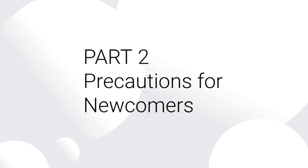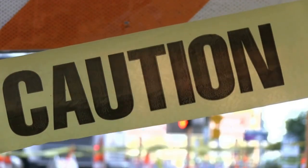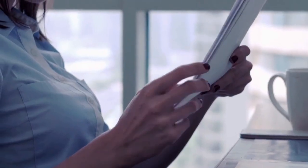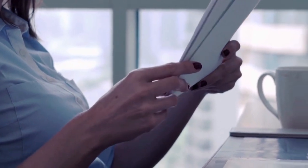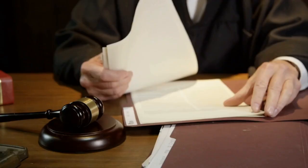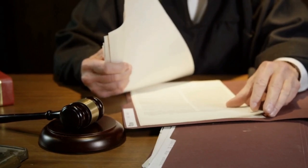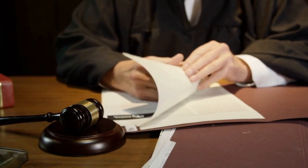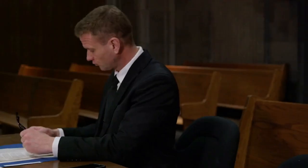Part 2: Precautions for Newcomers. If you are new to skip tracing, it's important to proceed with caution. Number 1: Know the legal boundaries. Skip tracing often involves accessing sensitive information, so it's crucial to stay within legal limits. Always ensure that you're using data responsibly and in compliance with the Fair Credit Reporting Act (FCRA) and other privacy laws. Be aware of the laws surrounding contact with individuals and the use of public records.